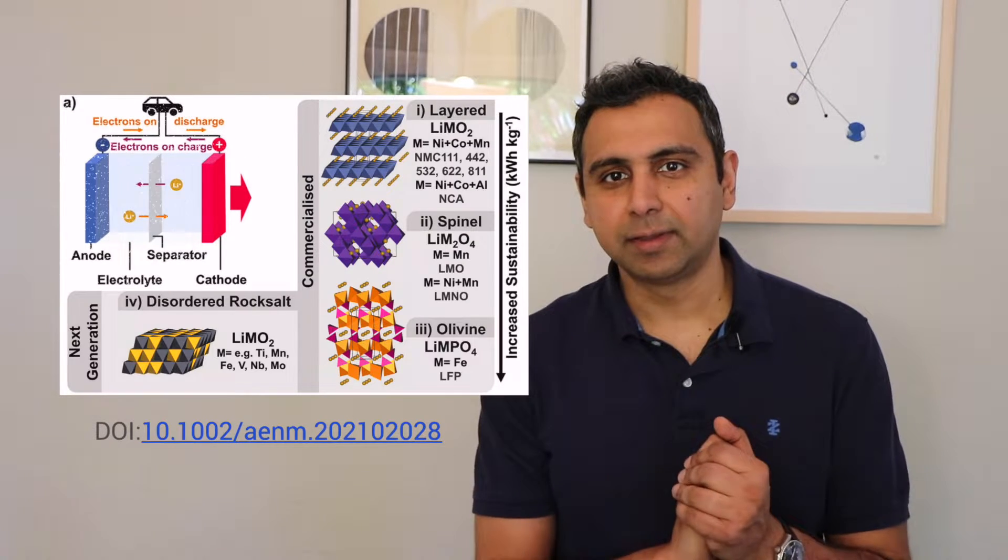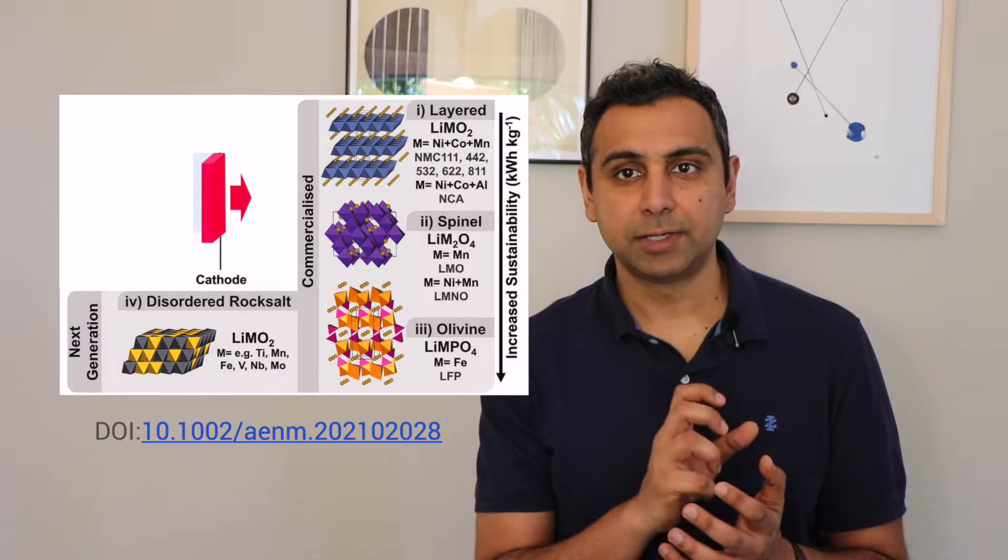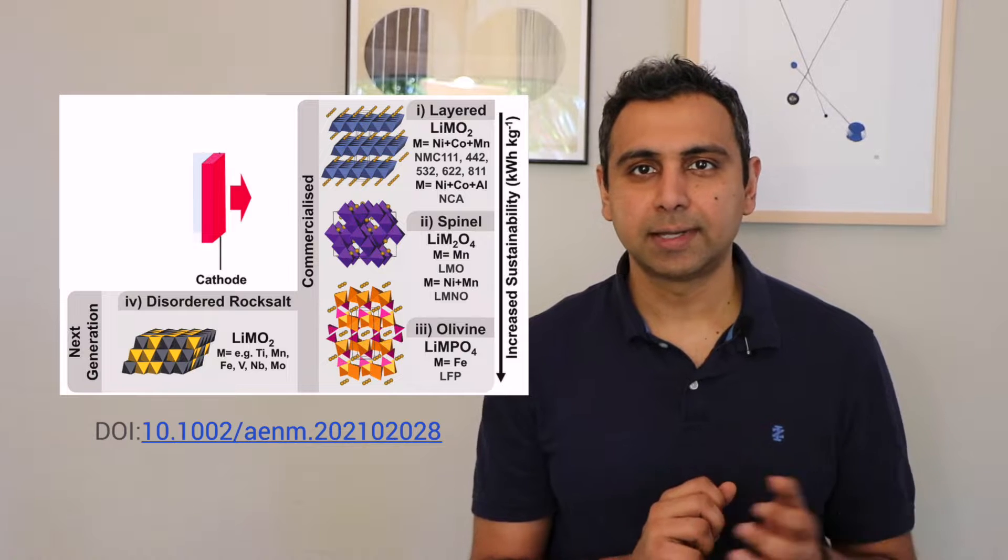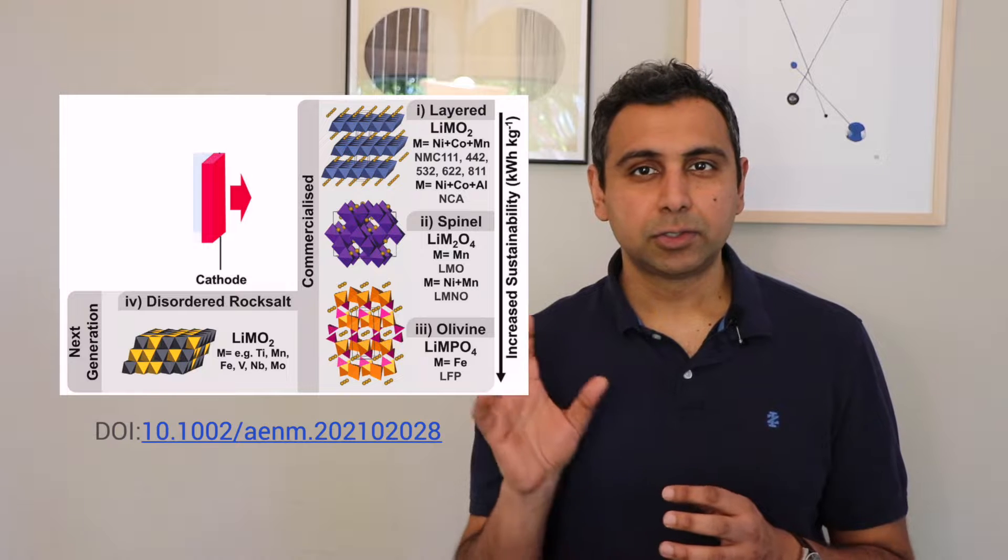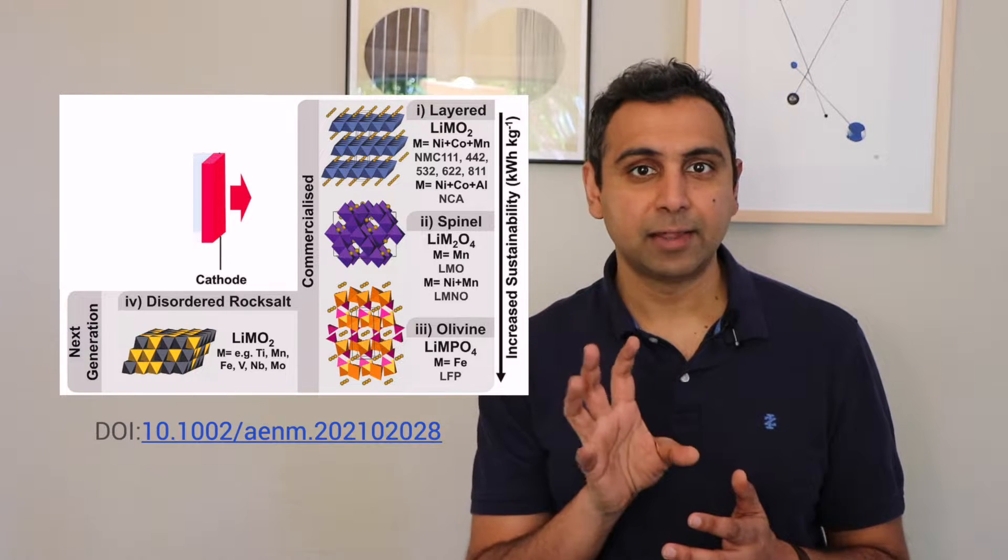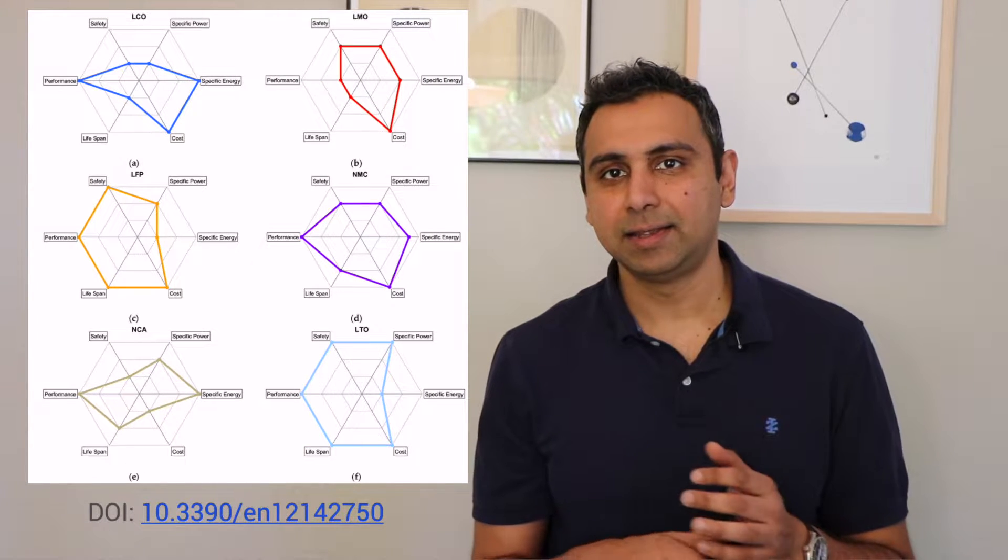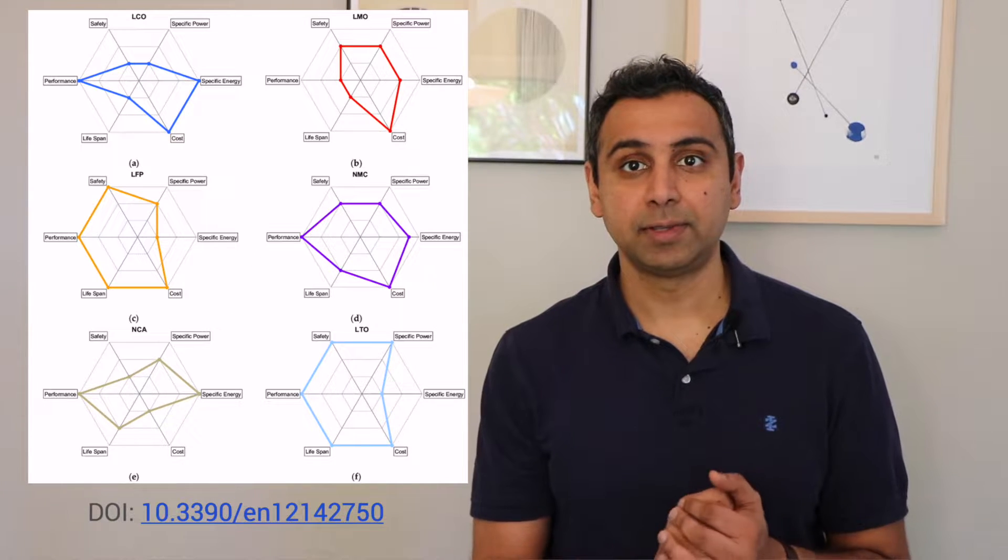For example, if you were to zoom in on the cathode, there are many different chemical formulations that you could put inside your battery like lithium manganese oxide, lithium cobalt oxide, lithium iron phosphate, or various other combinations. The choice of chemistry that you put for the cathode inside your battery determines its final properties, and you'll have to get trade-offs between things like the capacity and the rate capability and the safety of your battery depending on the chemistry that you choose.